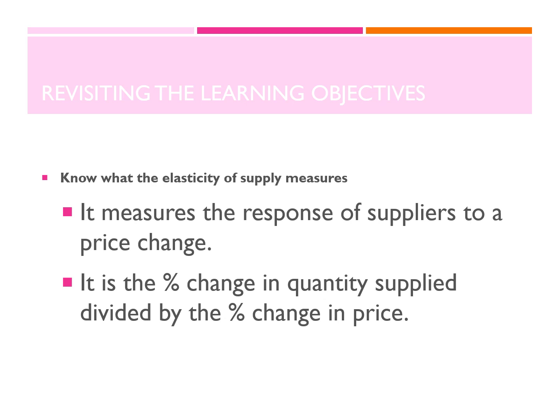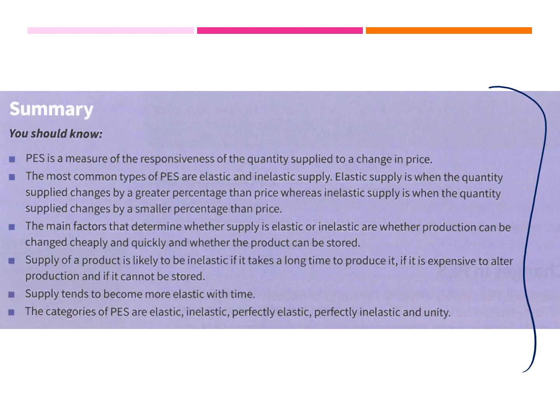In general, here is what we covered: PES measures the response of suppliers to a price change. It is the percentage change in quantity supplied divided by the percentage change in price. Please remember — I advise you to write notes in your copybooks, because writing down the information will help you understand and explain it better. That would be it for today. Thanks for watching, don't forget to like and subscribe, and have a lovely day.